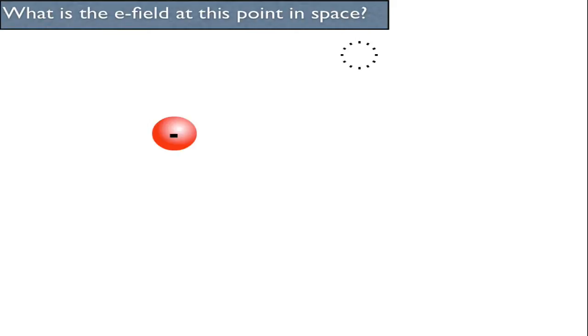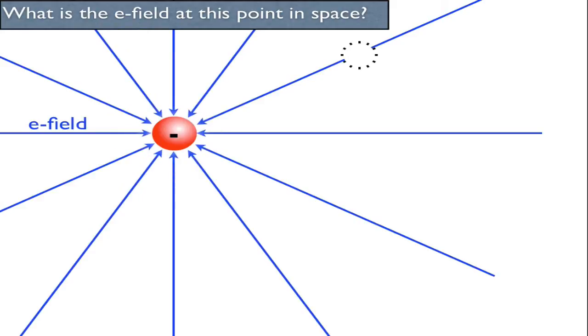But when I'm looking for an E-field at a point in space, I know that the E-field is going to go right through it, through that point in space.